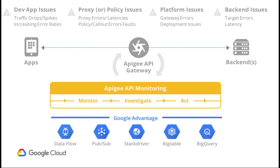While fixed alerts are valuable, the thresholds for a condition keep changing over time, and that's where anomaly detection can help you. Anomaly detection is built on top of Google's AI and machine learning, and it feeds on your historical data. For example, it can alert you in scenarios you haven't even thought of — like a slight uptick in 500 errors in production within the region West. It can go feed on the historical data, identify patterns, and alert you accordingly.